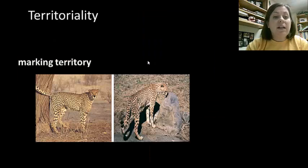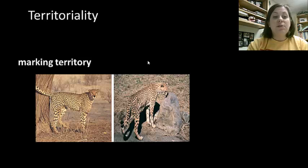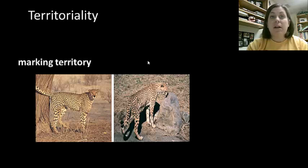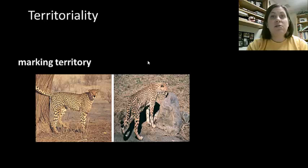Territoriality is when an individual will defend an area from other animals. This is also to reduce aggression between individuals, and animals with better territories tend to get better mates, which improves their reproductive success. A lot of times they're going to mark their territory somehow — in this particular case they're marking their territory with a type of urine pheromone, which we'll discuss more later.